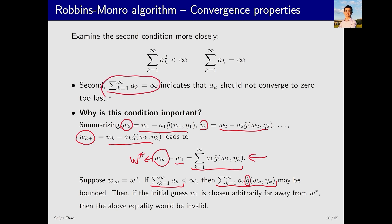So this condition allows us to safely choose w_1, regardless of how far it is from w star, ensuring convergence. A question that naturally follows is what kind of a_k can satisfy these two conditions. One answer is that a_k equals one over k.